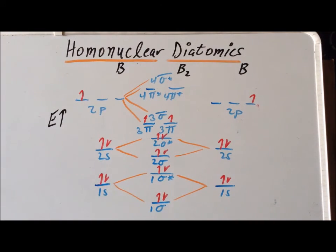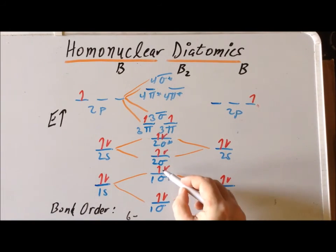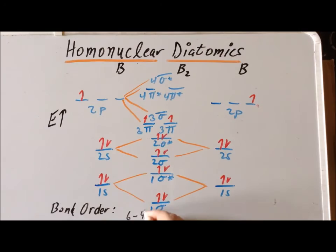Having done that, we can now calculate the bond order for this particular compound. We have six bonding electrons and four antibonding electrons, which gives us a bond order of one. So diboron is held together by a single bond.